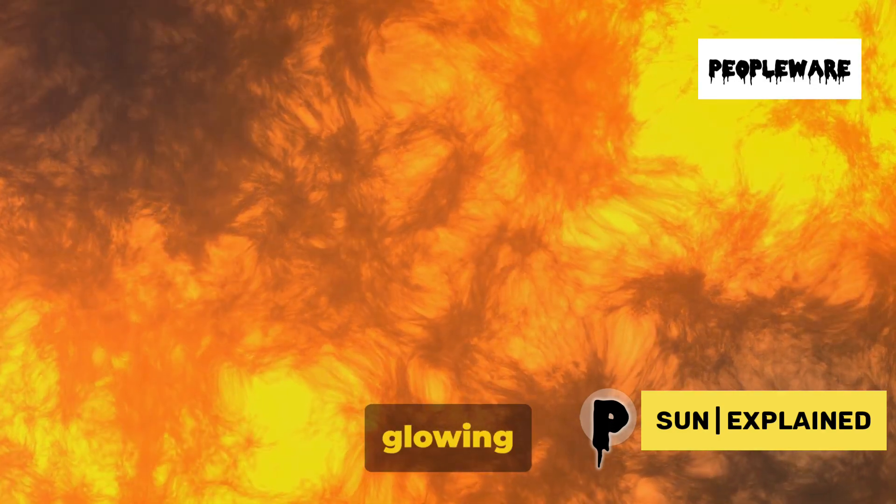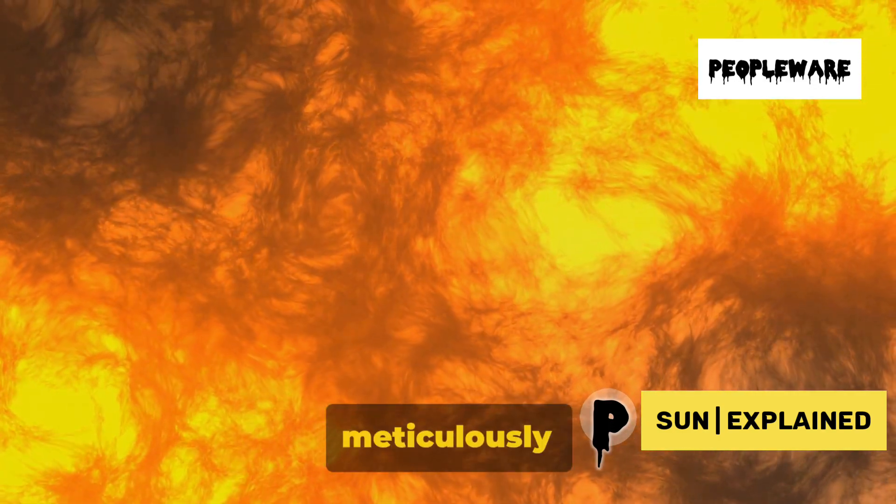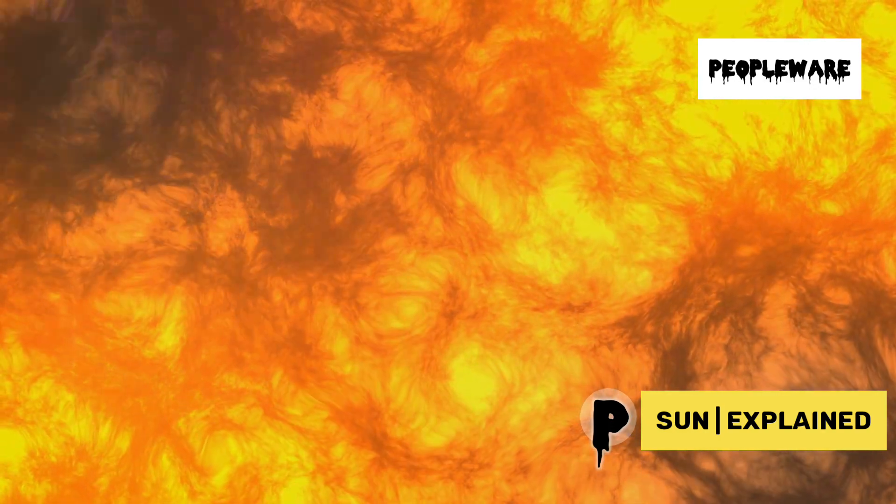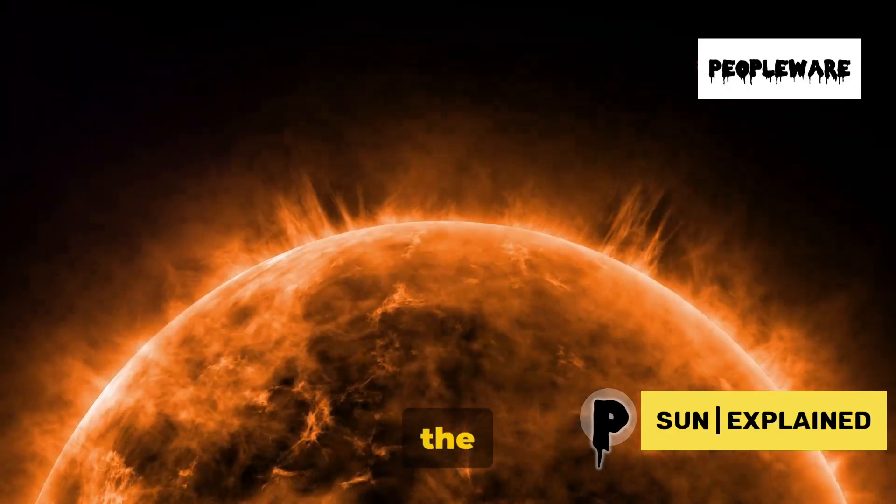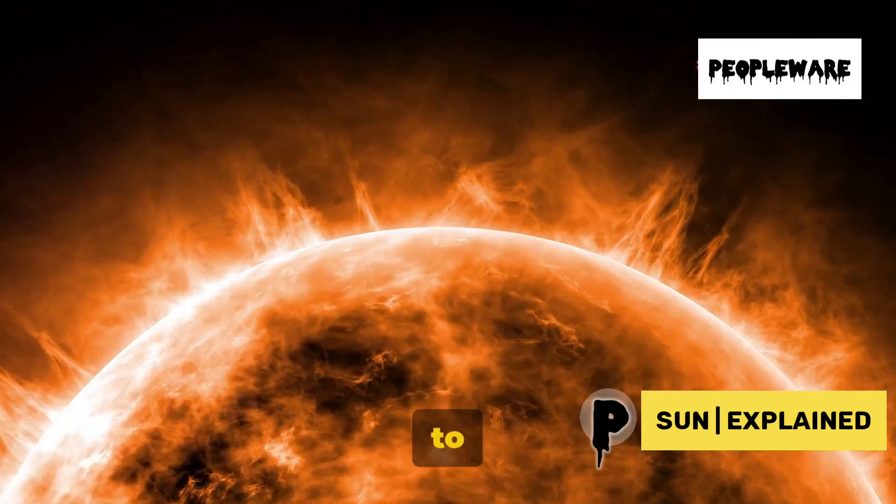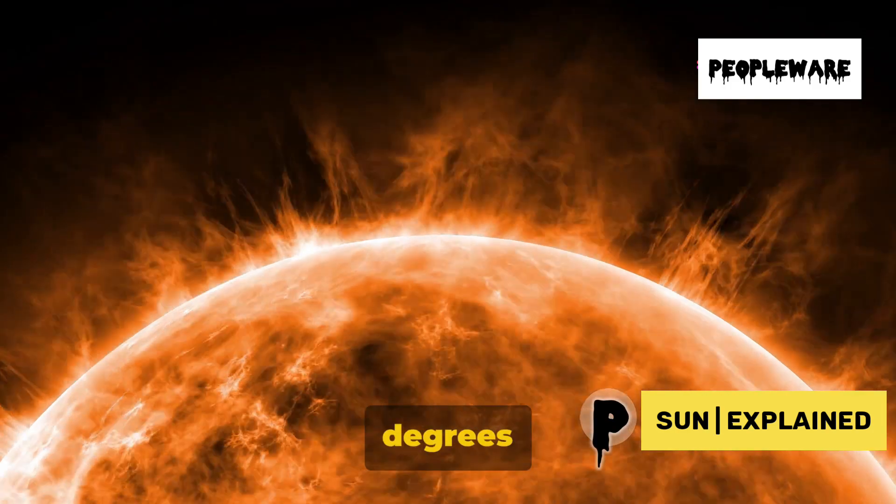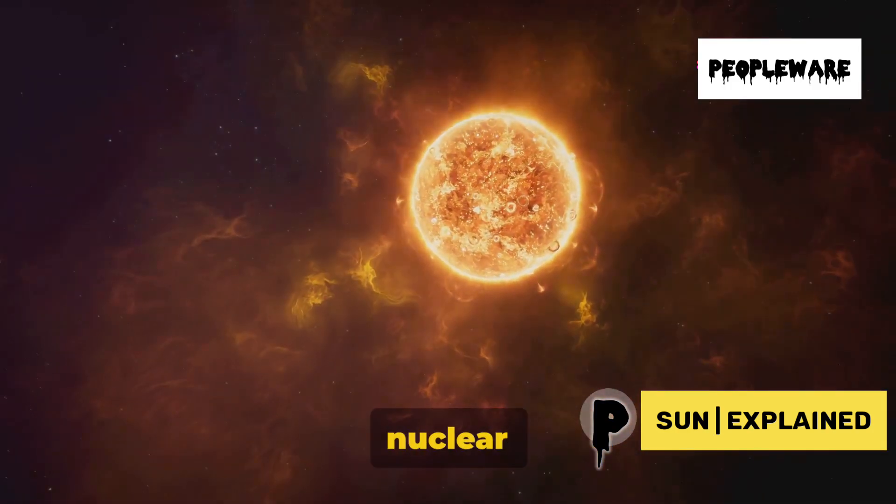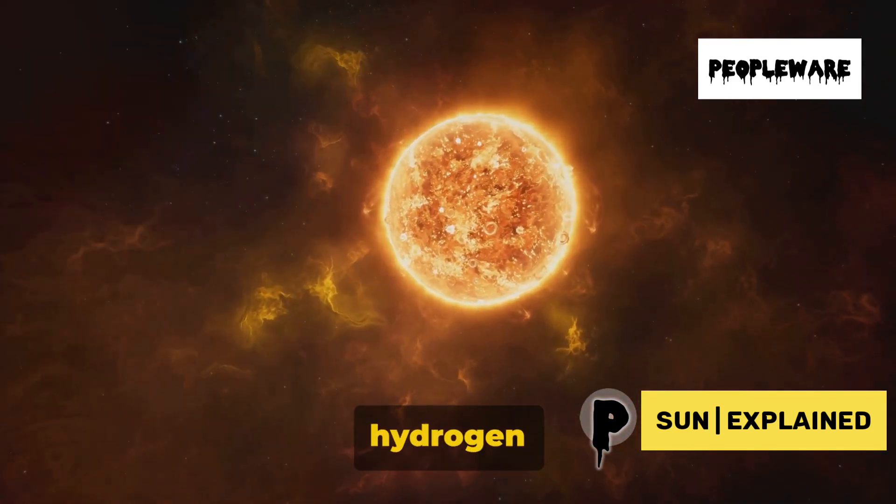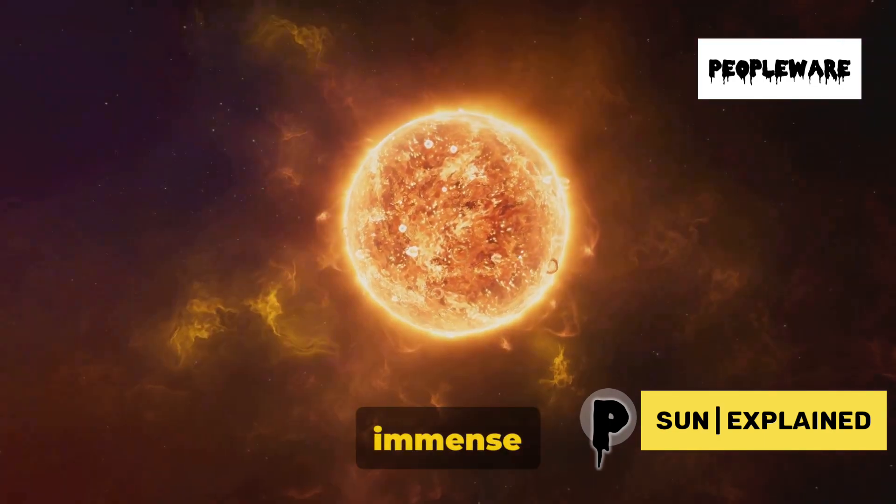Our Sun is not just a random glowing orb, but a meticulously structured celestial body. At the very center, we find the core, where temperatures soar to a staggering 15 million degrees Celsius. This is where nuclear fusion occurs, converting hydrogen into helium and releasing immense energy.